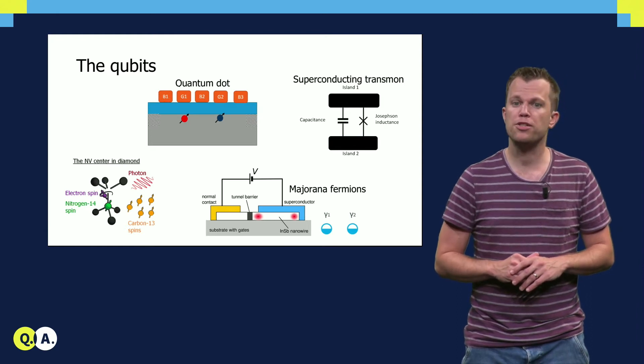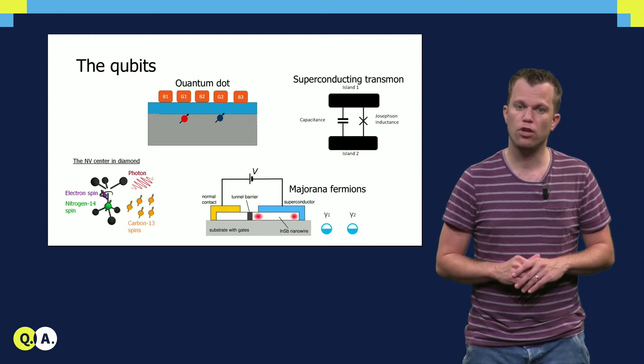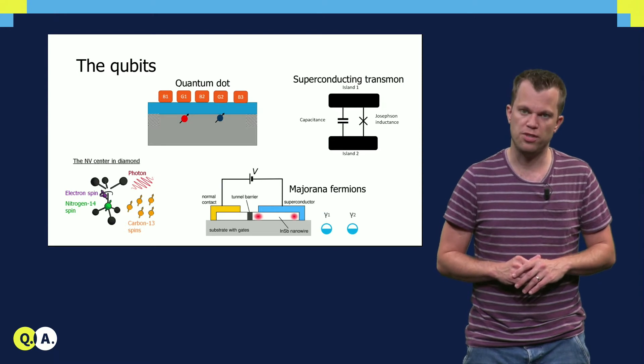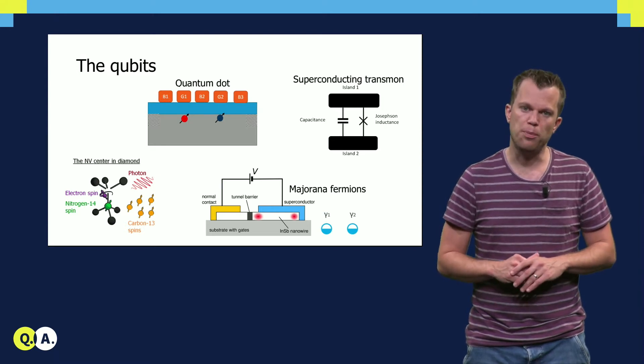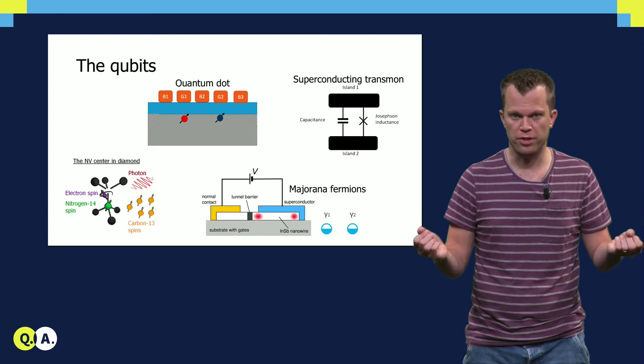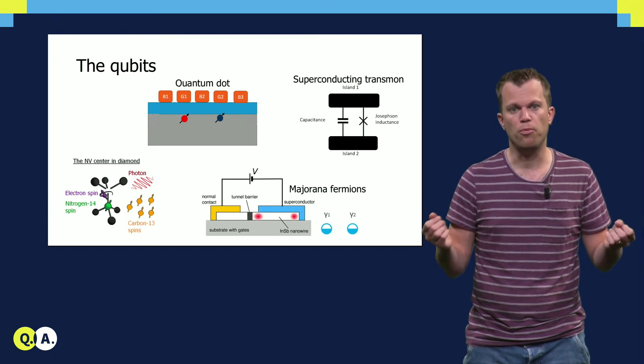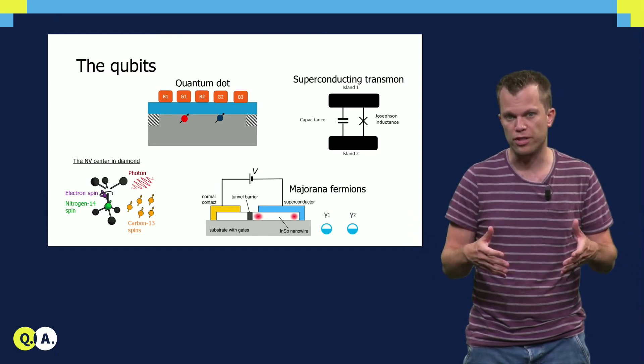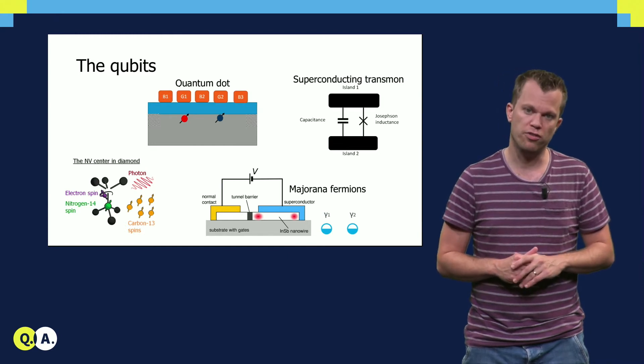These qubits could become exponentially less sensitive to local noise with increasing system size. That is, by increasing the separation between Majorana-Fermions, the qubits become more and more protected against local noise, and can thus hold their coherence for a longer time.